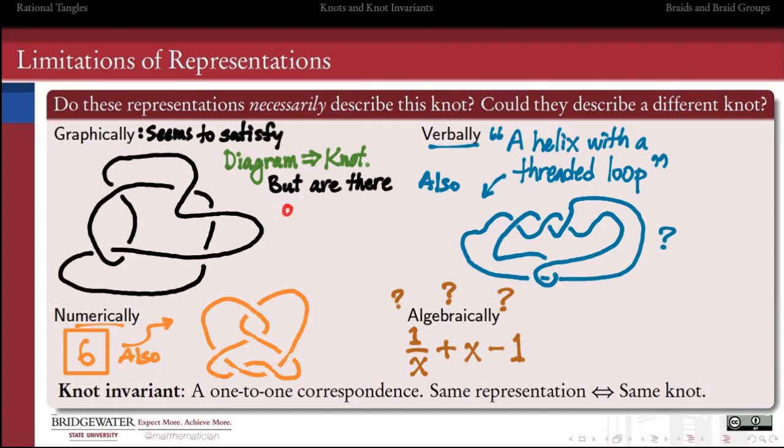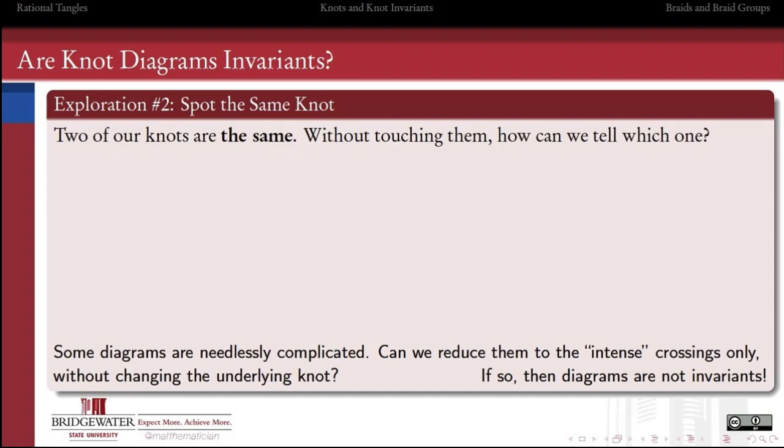The problem is that the converse might not be true, that there might be other diagrams that actually describe still the same knot. That's going to be our next question: are knot diagrams invariants for knots? In other words, is it always true that the same diagram gives me the same knot, and that the same knot will have the same diagram?